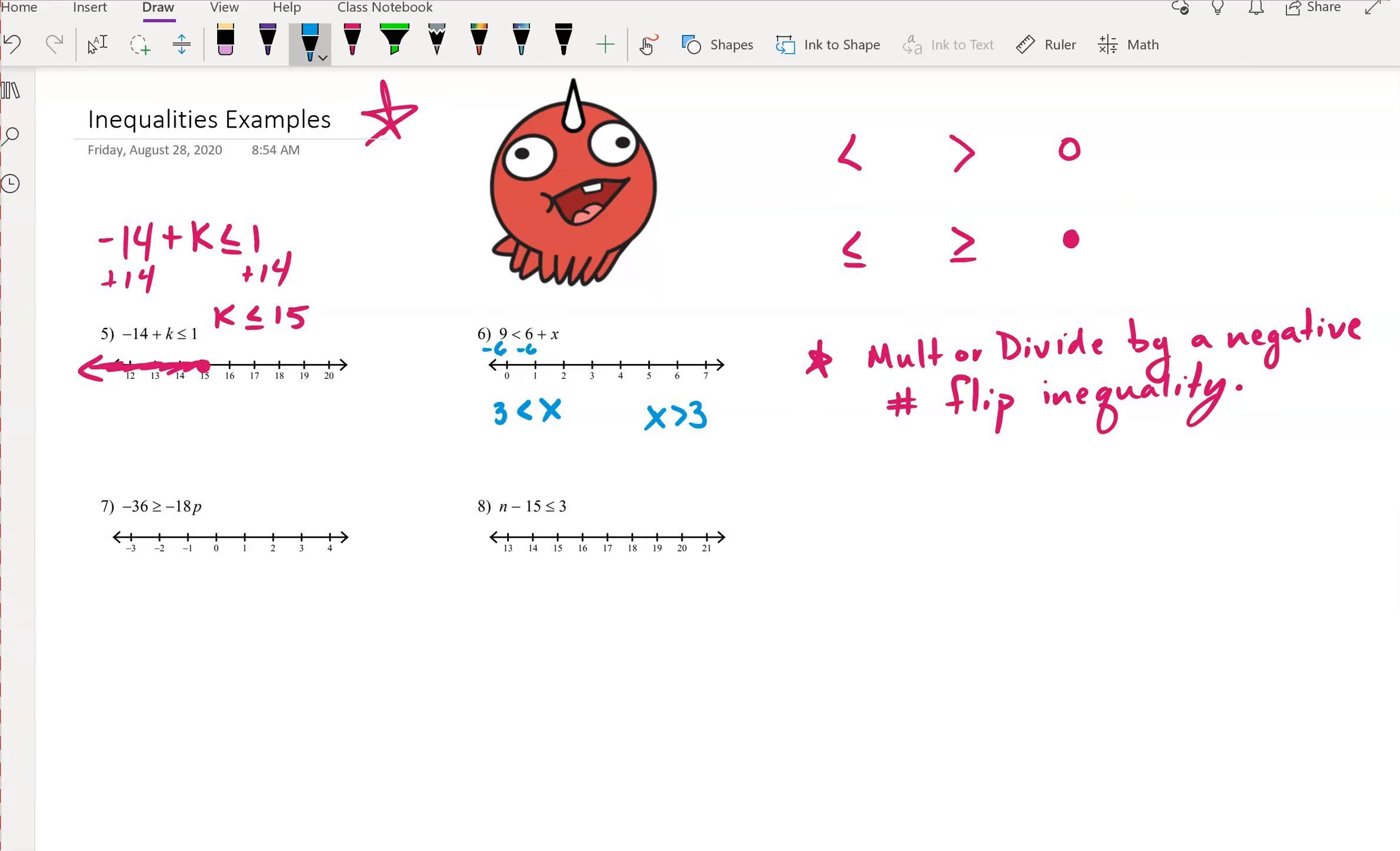And it's not equal to, it's strictly greater than, so we're going to do an open circle at 3. And then we want values that are greater than 3. So we would shade that way.